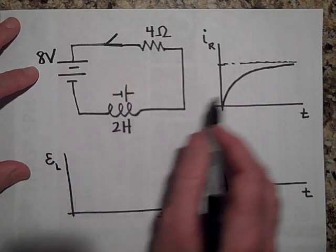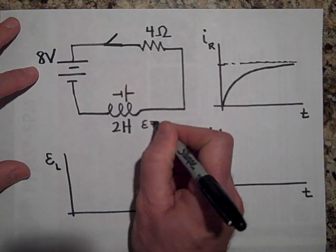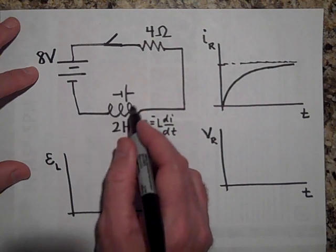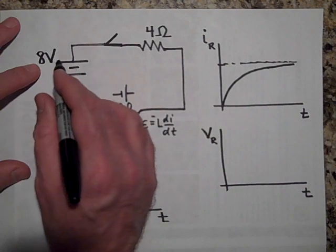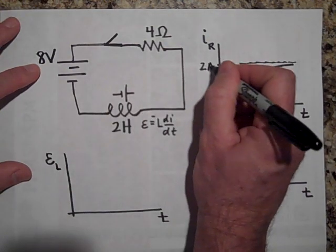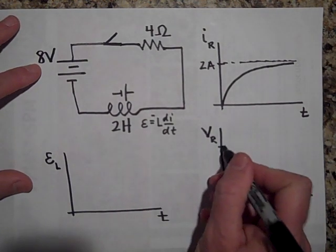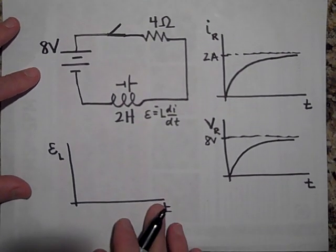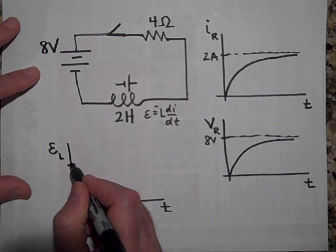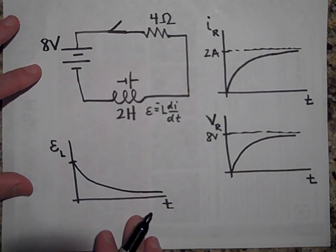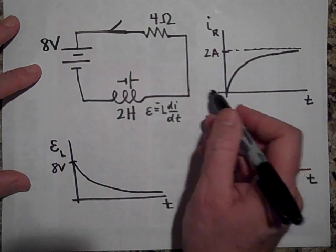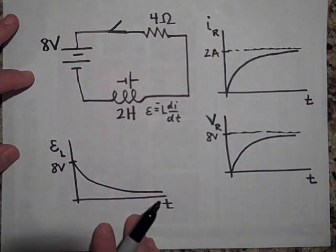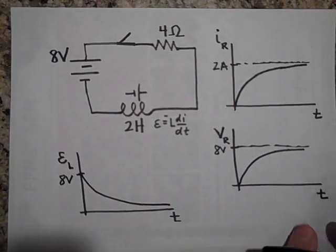Way out at steady state, the slope is zero, so DI/DT is zero, and the EMF equals negative L·DI/DT, which means there's no more voltage across the inductor. That means there's eight volts across the resistor, and eight volts divided by four ohms is two amps. The voltage across the resistor builds up to eight volts, while the EMF starts at eight volts and dies out — because at t equals zero there's no current, so by Kirchhoff's loop rule all the voltage is lost across the inductor.